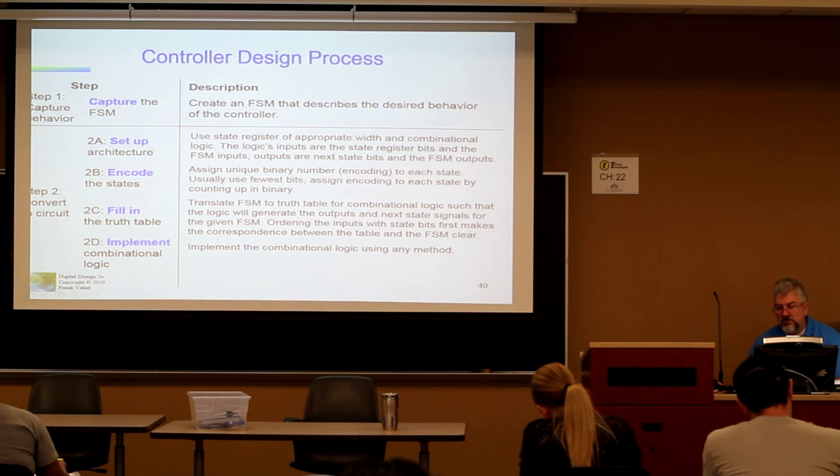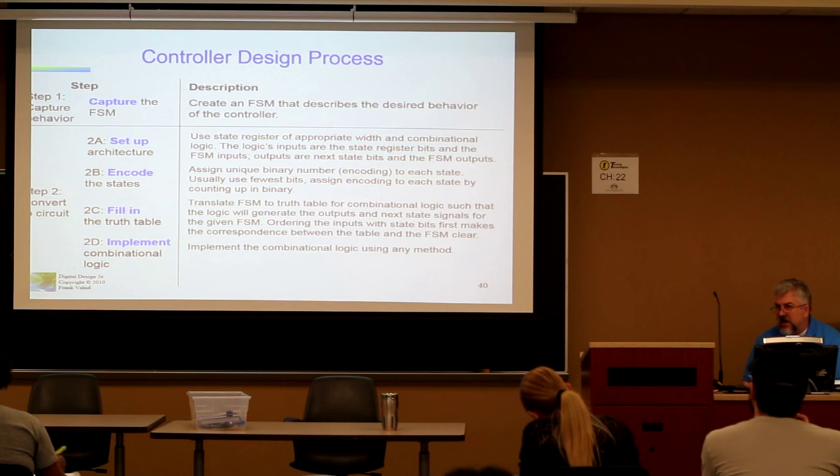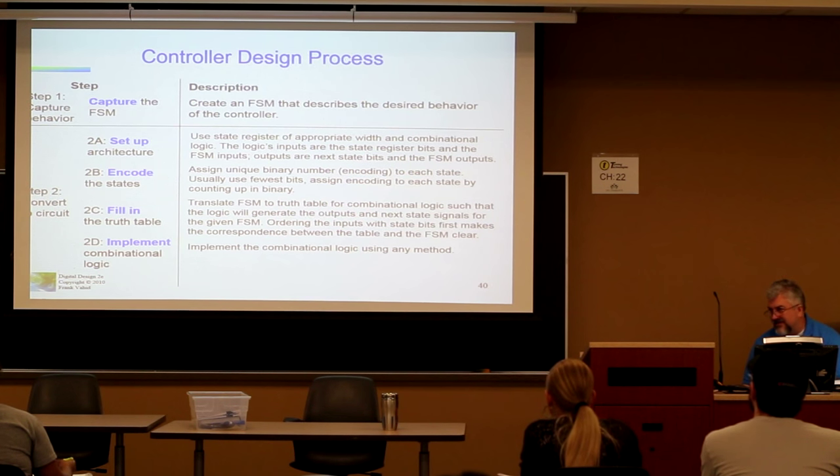Notice that you're using these bits coming out, which identify what the state is. Notice here we have four states, right? And how many lines do we have coming out? Two. Two. Meaning what? Four combinations, right? One, two, three, four. Basically, whatever state number it is, is represented by these two bits right here. Four states, two bits. If we had eight states, how many bits would we need? Three. Three. Assign unique binary numbers to each state. Use the fewest number of bits. Translate the finite state machine to truth table for combinational logic, such that the logic will generate the outputs and the next state signals. Ordering the inputs and the state bits first makes the corresponding. We'll show you examples. Implement the combinational logic using any method. What did we show an example of earlier? K-maps, right?